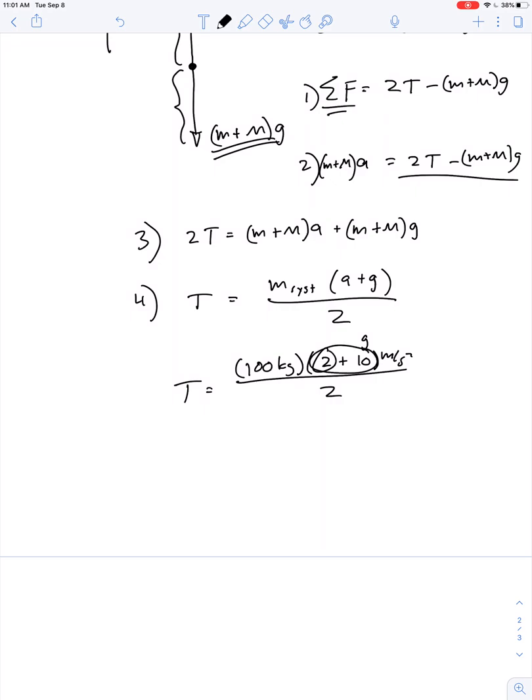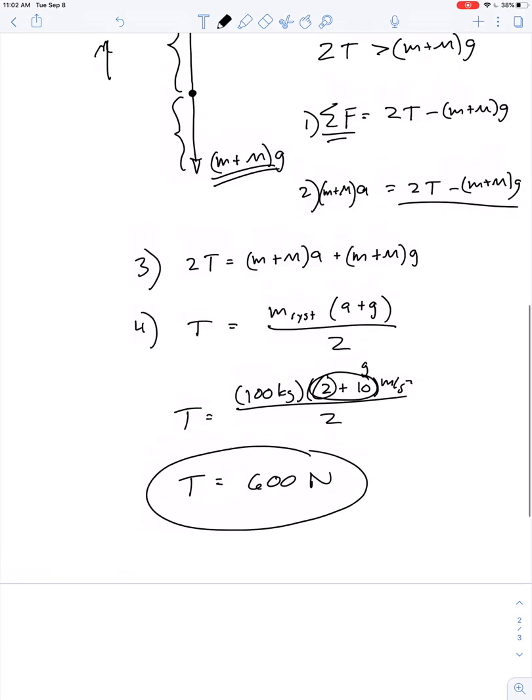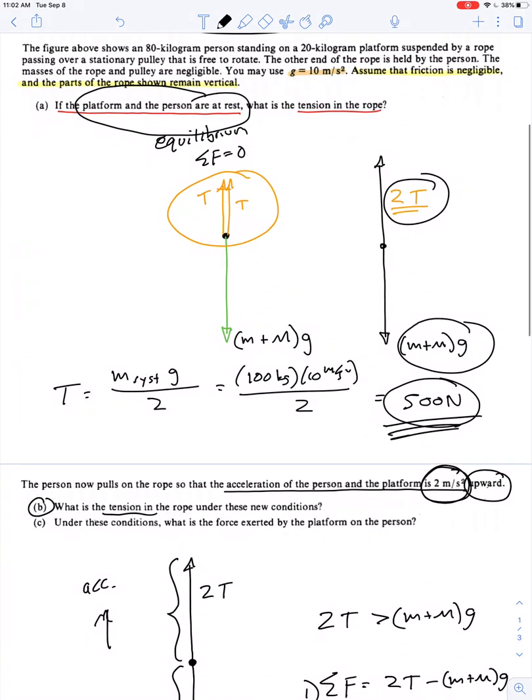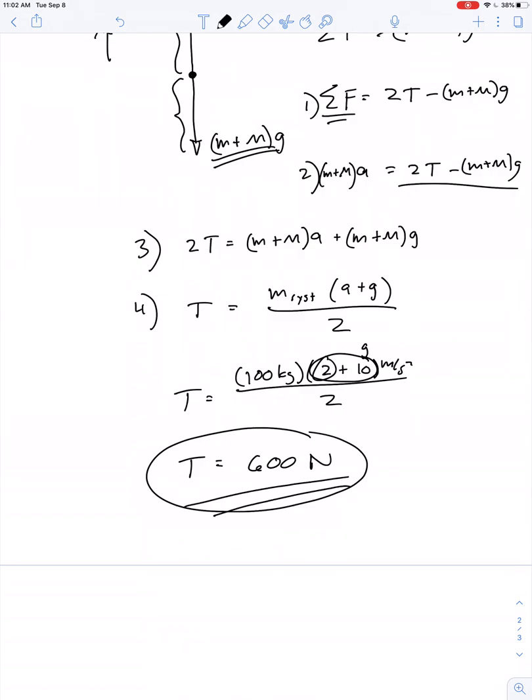So 12 times 100 is 1200, 1200 divided by 2 is 600. So that makes sense, that's reasonable. Shouldn't the tension increase? It went from 500 newtons to hold him at rest up to 600 newtons for him to be able to accelerate in the upward direction.